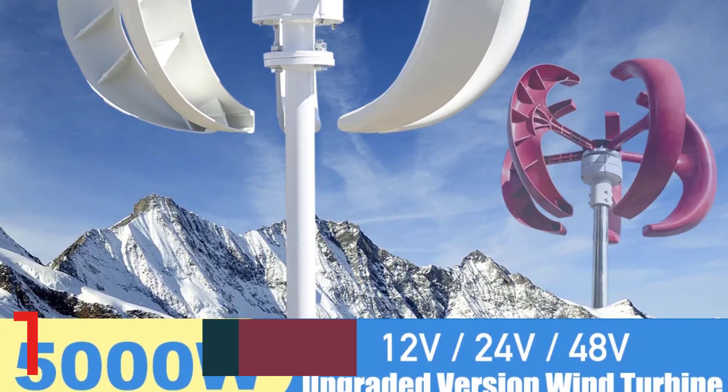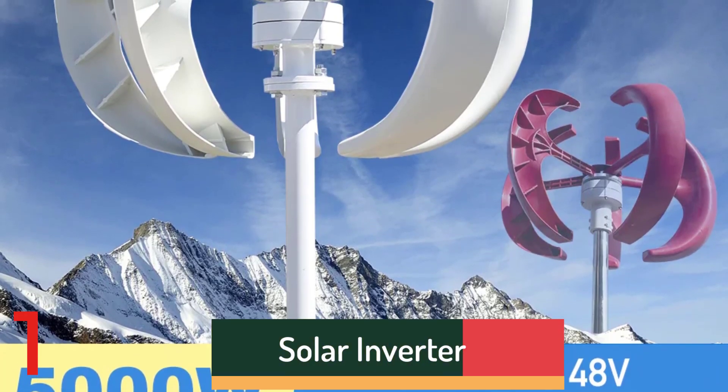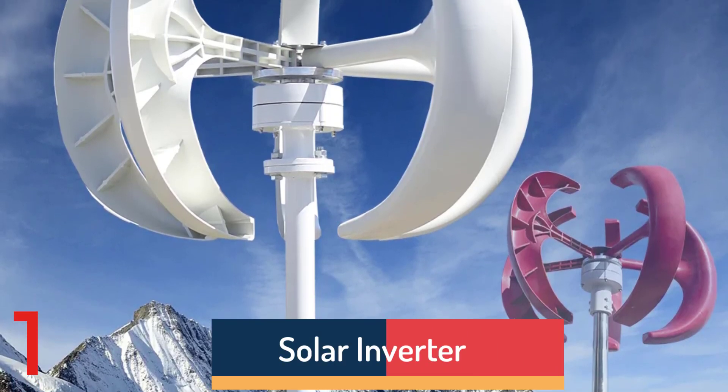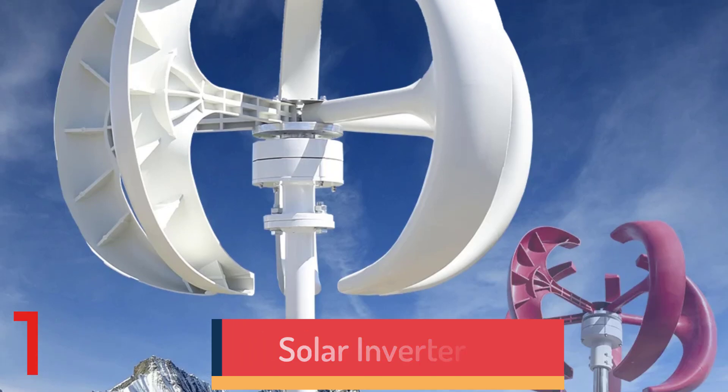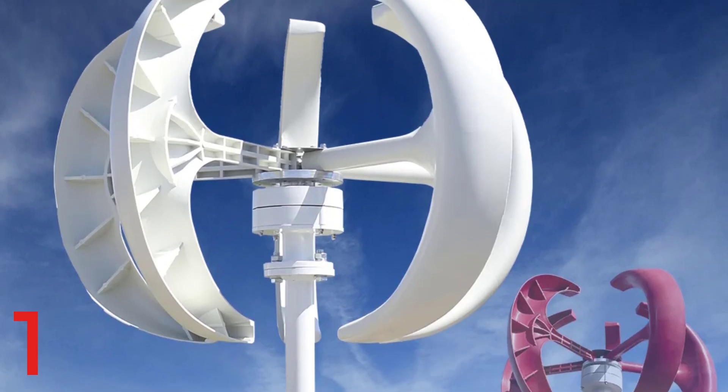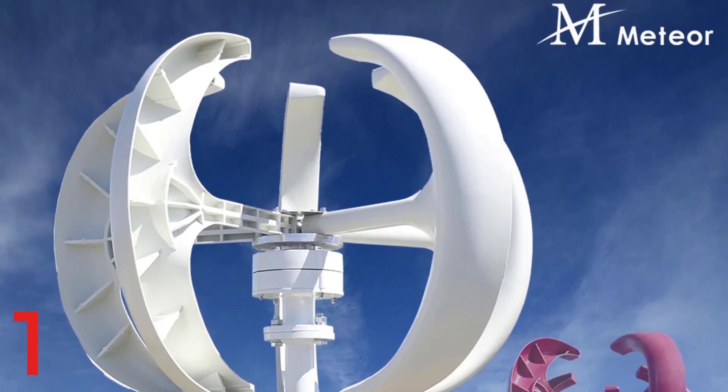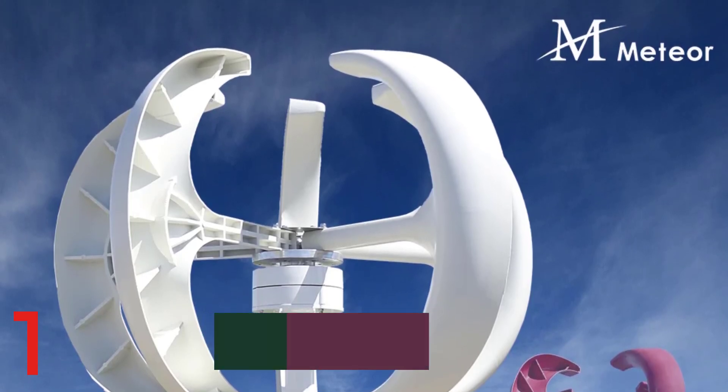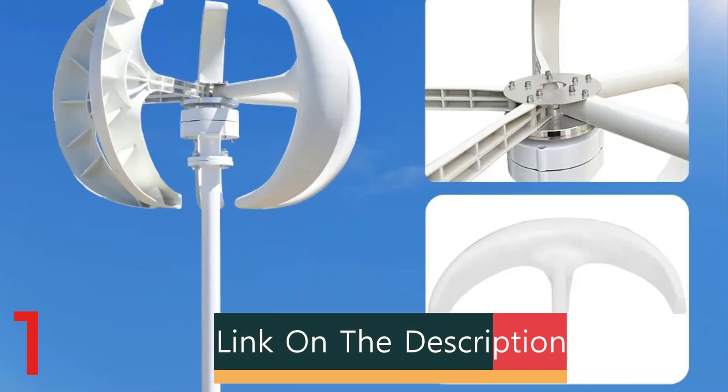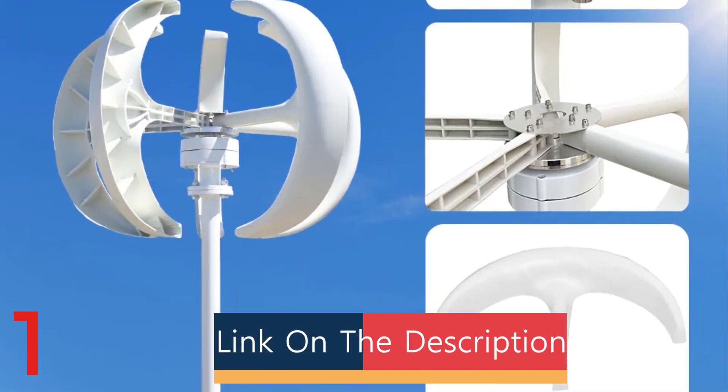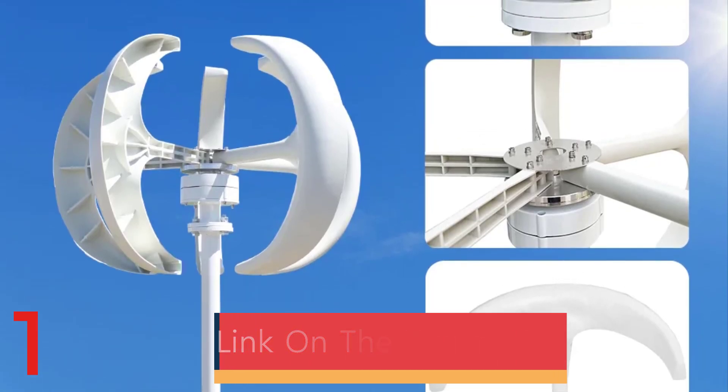Number 1: The 5000W Vertical Axis Wind Turbine Generator is a high-efficiency wind power solution for off-grid applications. It features low noise and low start wind speed technology, 5 durable blades, and is customizable to suit different voltage requirements. The turbine is certified by CE and features an MPPT charger for energy conversion efficiency.